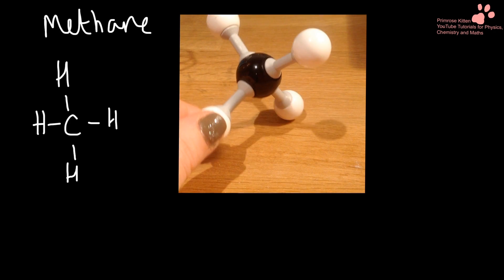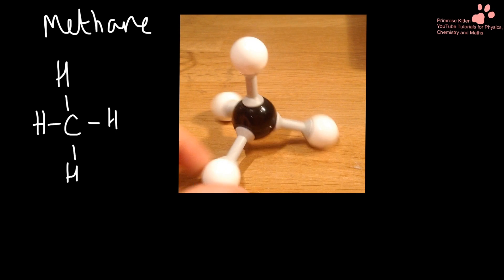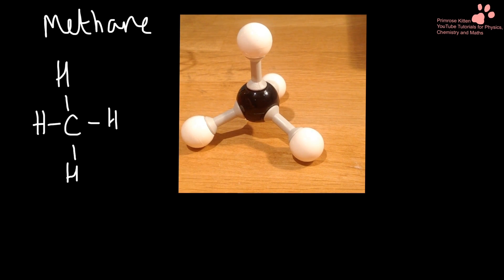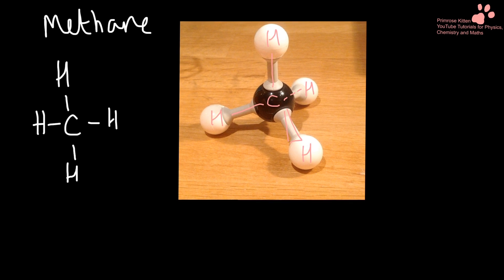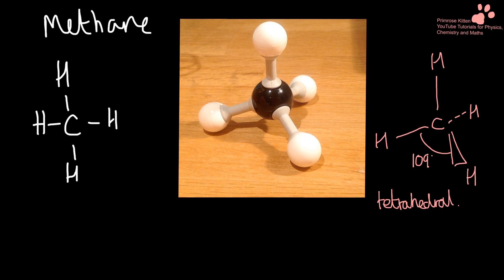Here we have methane. Now you can see, this is what I've just showed you, it is not flat. But we need to work out how to draw this properly. So we have, let's wait for that to stop wiggling around, there we go. We have our carbon in the middle. In the plane we have hydrogen at the top. Again in the plane we have hydrogen at the top. Going behind we have another hydrogen. And then coming out as a dashed wedge we have another hydrogen. You can see what it looks like. The bond angles you need to know for this one are 109 degrees and it is a tetrahedral shape.